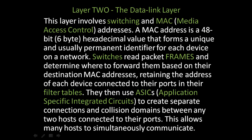Now let's examine the second layer, or the data link layer. Layer 2 involves switching and MAC, or media access control, addresses. A MAC address is a 48-bit or 6-byte hexadecimal value that forms a unique and usually permanent identifier for each device on a network. Software can be used to spoof the MAC address on devices, and some devices can have their MAC addresses reprogrammed in EEPROM or non-volatile memory.